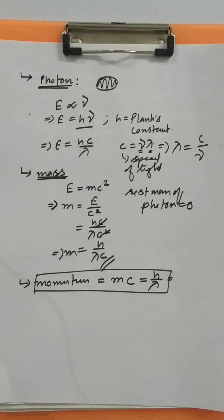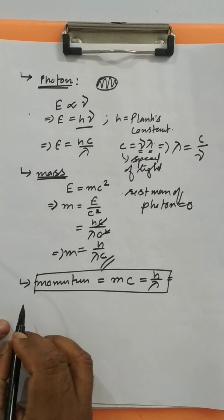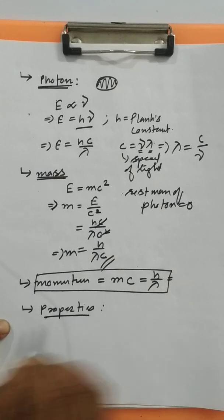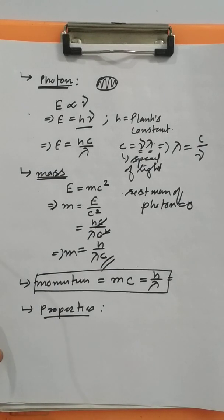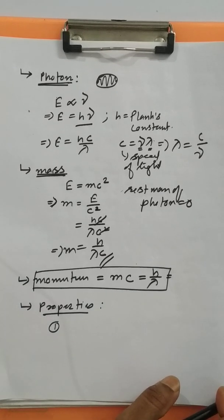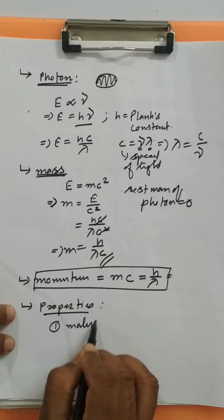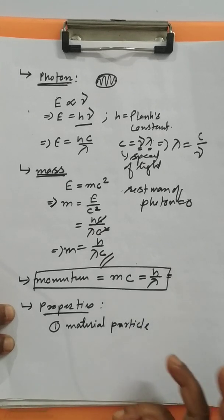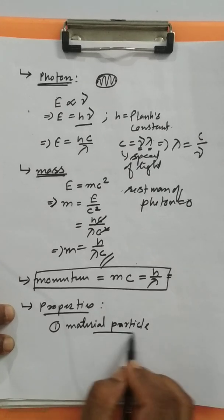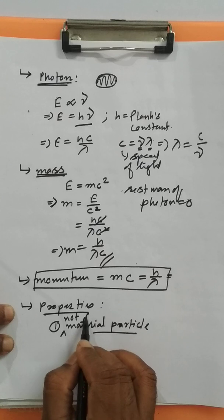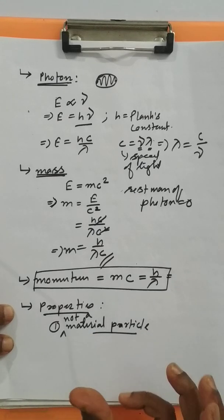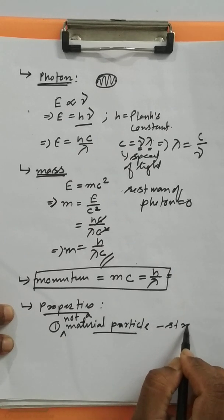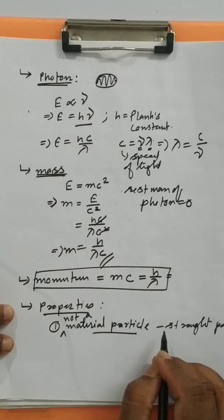Now let us see some properties of photon. First of all, photon is not a material particle — it is not like an electron or proton. Electrons and protons are material particles; they have mass when they are at rest. But photon is not a material particle. It is just a packet of energy and it travels in a straight path with the speed of light.